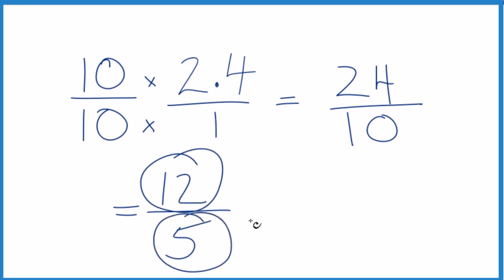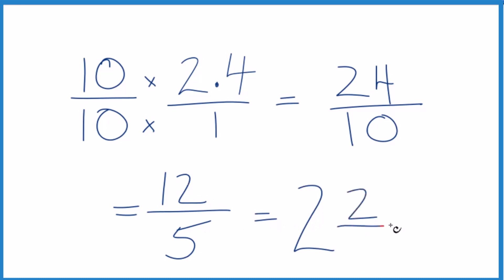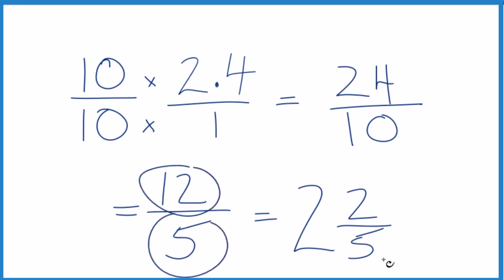This is an improper fraction because the numerator is larger than the denominator, so we could change it to a mixed number as well. 5 goes into 12 two times — 2 times 5 is 10 — with 2 left over. Bring the 5 across, and 2.4 equals the mixed number 2 and 2 fifths. You can check that: 2 times 5 is 10, 10 plus 2 gives us the 12, and we just kept the 5 the same.